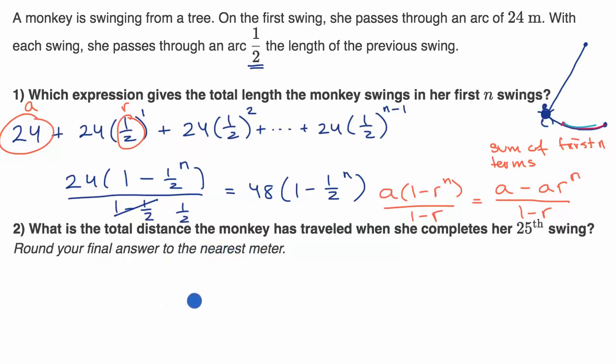All right, well we can just use this expression here, and we know that we are completing our 25th swing. So n is 25, and so we'll just put a 25 there. So that's going to be 48 times (1 - (1/2)^25).